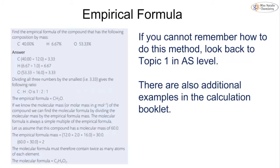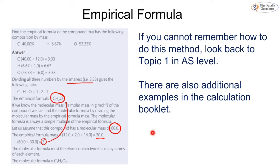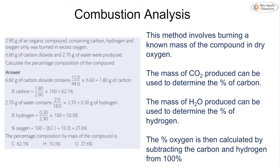To find the empirical formula we use the composition by percentage mass. For example, with 40% carbon, 6.67% hydrogen, and 53% oxygen, we divide each by their atomic mass to get a ratio, then divide by the smallest number. That gives a ratio of 1:2:1, so an empirical formula of CH₂O. We can then find the molecular formula if given the molar mass — if the molar mass is 60 and the empirical formula mass is 30, we multiply by 2 to get C₂H₄O₂.